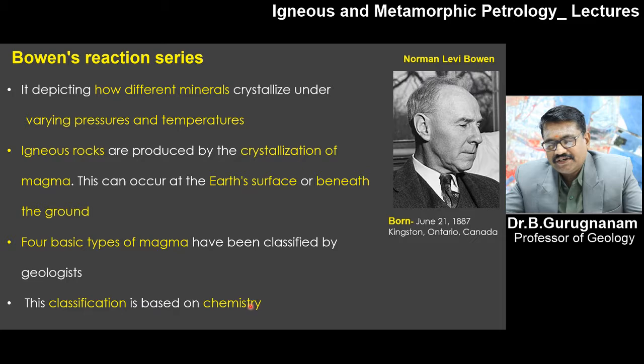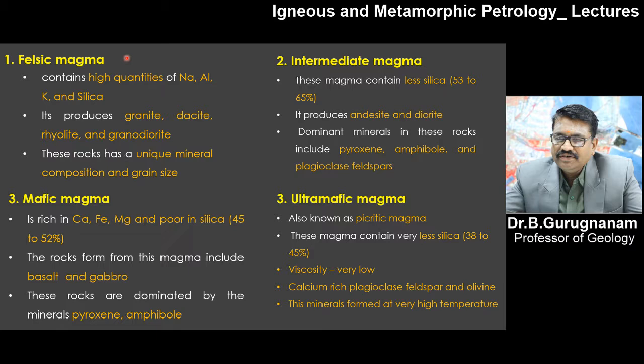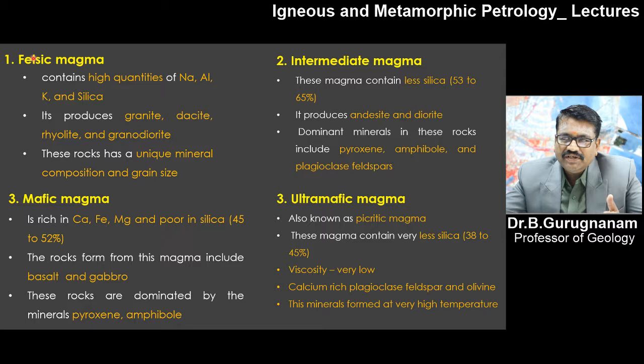We will see the four major classifications of magma: felsic magma, intermediate magma, mafic magma, and ultramafic magma. This classification is mainly based on the percentage of silica content in the magma.